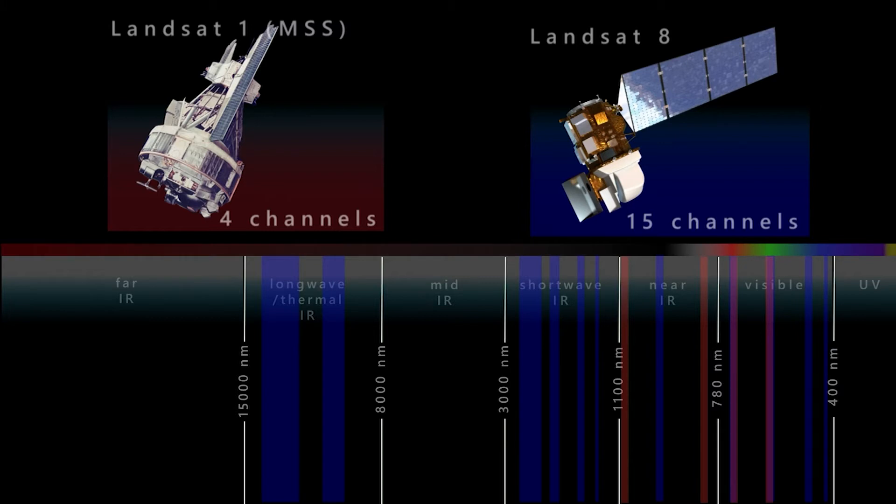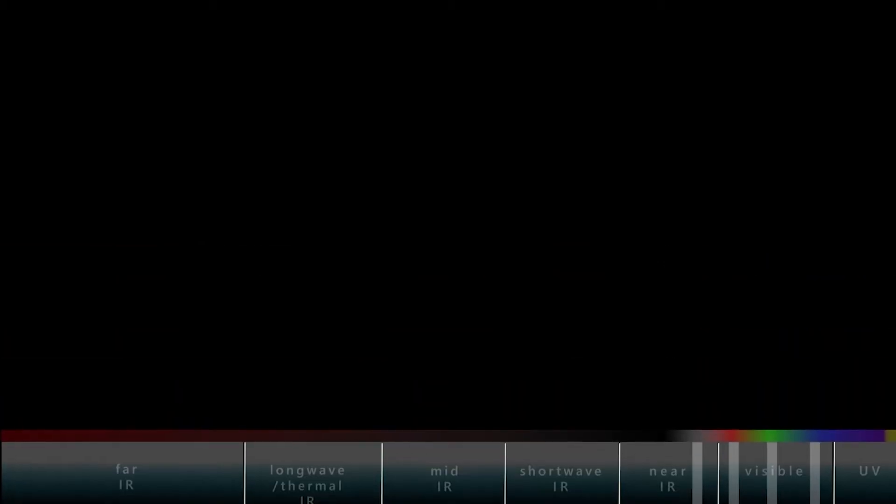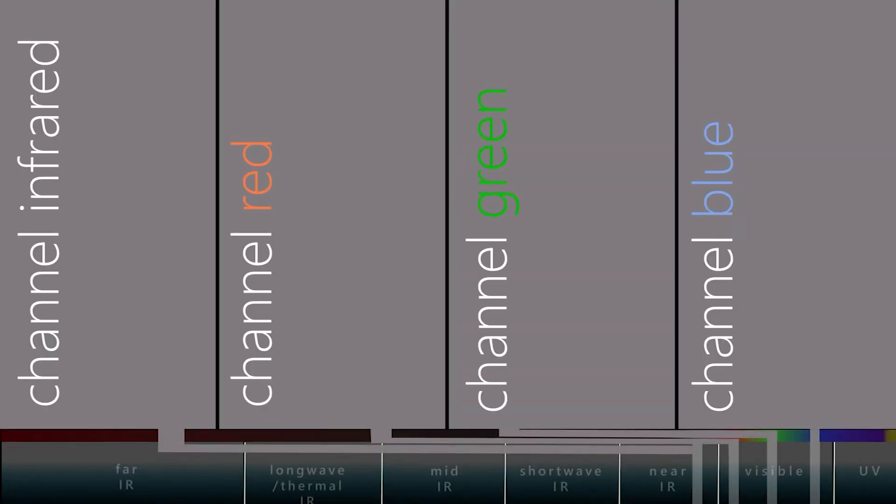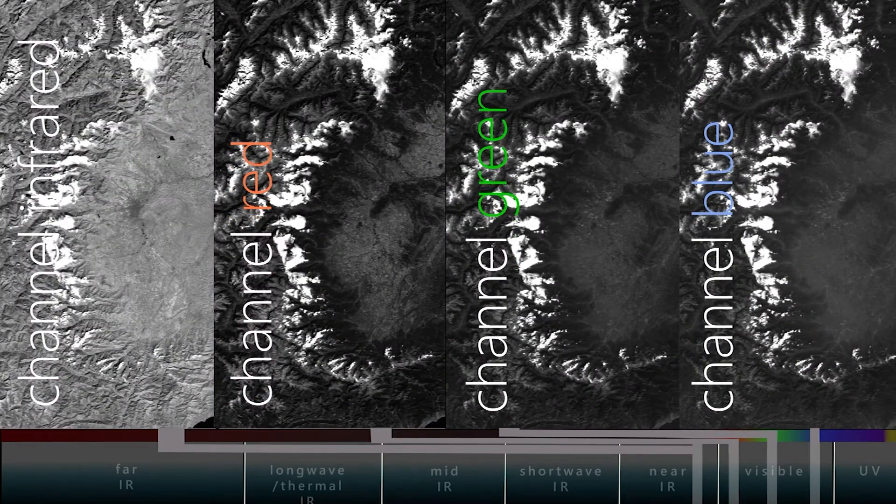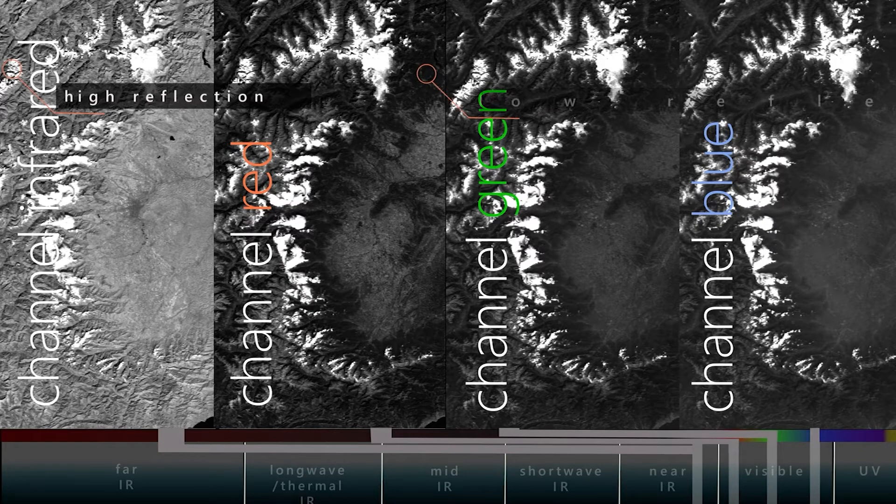The sensors used in remote sensing record wavelength ranges in specific spectral channels. But what happens next? The information captured by each channel is stored as a grayscale image. In each grayscale image, the intensity of the reflection in different areas of the Earth is recorded for the specific wavelength range of that channel.